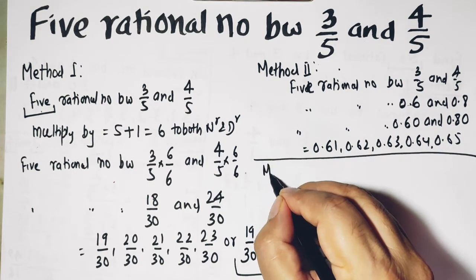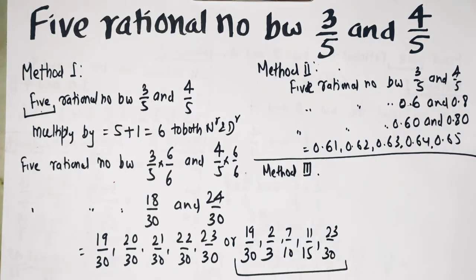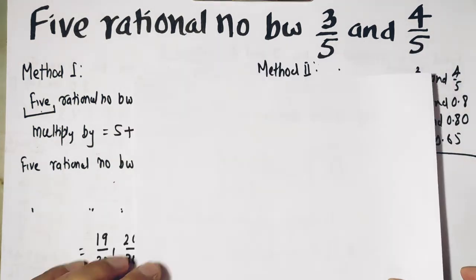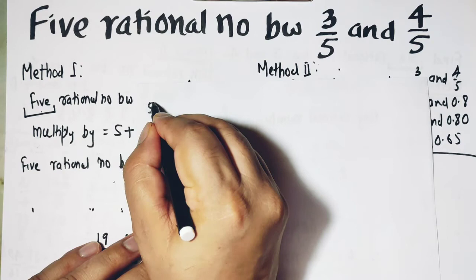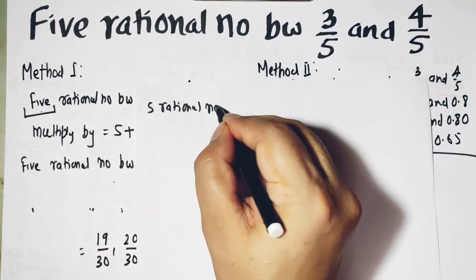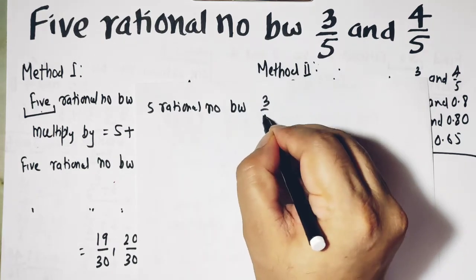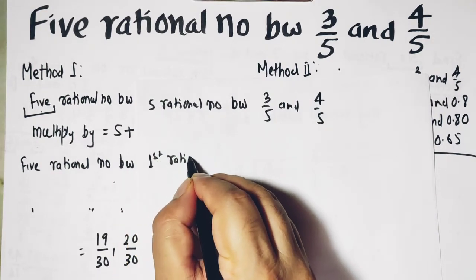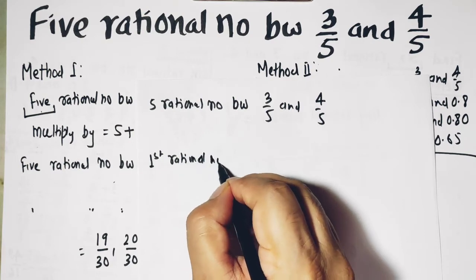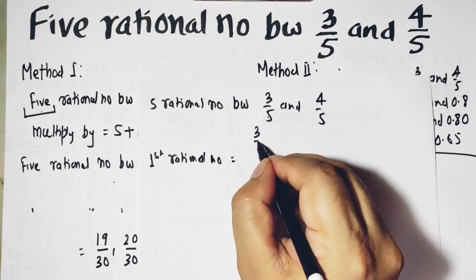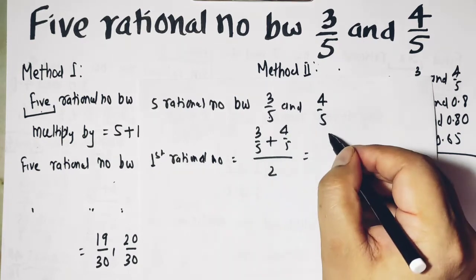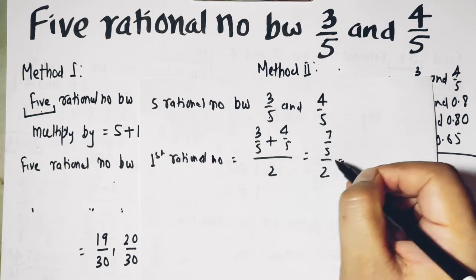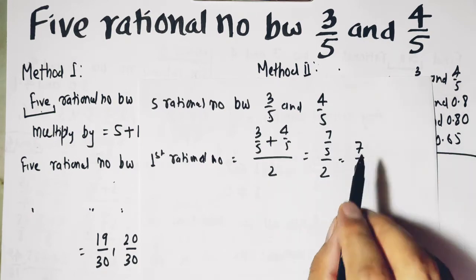Now let's talk about the third method. We have to find 5 rational numbers between 3 upon 5 and 4 upon 5. So the first rational number would be this plus this upon 2. So it is 7 upon 5 upon 2. If this 5 goes here, it will be 7 upon 10. And this is our answer, the first rational number.